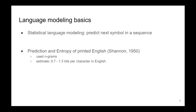Language modeling has a very rich and long history — almost surprisingly so, because people were thinking about statistical models of language early, even at a time when computers didn't really exist yet. Claude Shannon, who obtained the Nobel Prize for information theory, later went on to apply information theory to language. He wrote a very interesting paper about predicting symbols in English and computing the entropy of the language. He used very simple models called n-grams, which turned out to be very hard to beat.